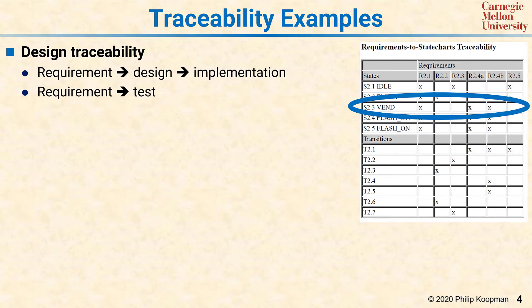While it's possible to get fancy and indicate high, medium, or low traceability, in practice it's usually enough to just put an X where you think it mostly traces and leave it blank where it doesn't. This is not supposed to be a high-precision instrument, but if you see a completely empty column, it means nothing is contributing to that requirement. And if there's a completely empty row, that means that row is there with no requirement causing it to be there. An empty row or empty column tells you there's a traceability problem that deserves more attention.